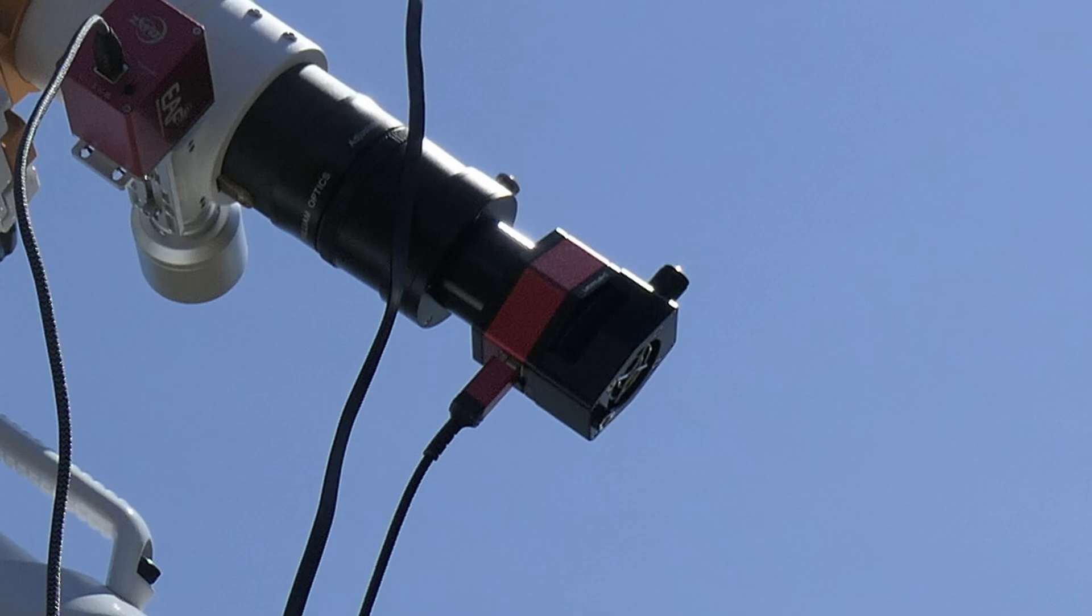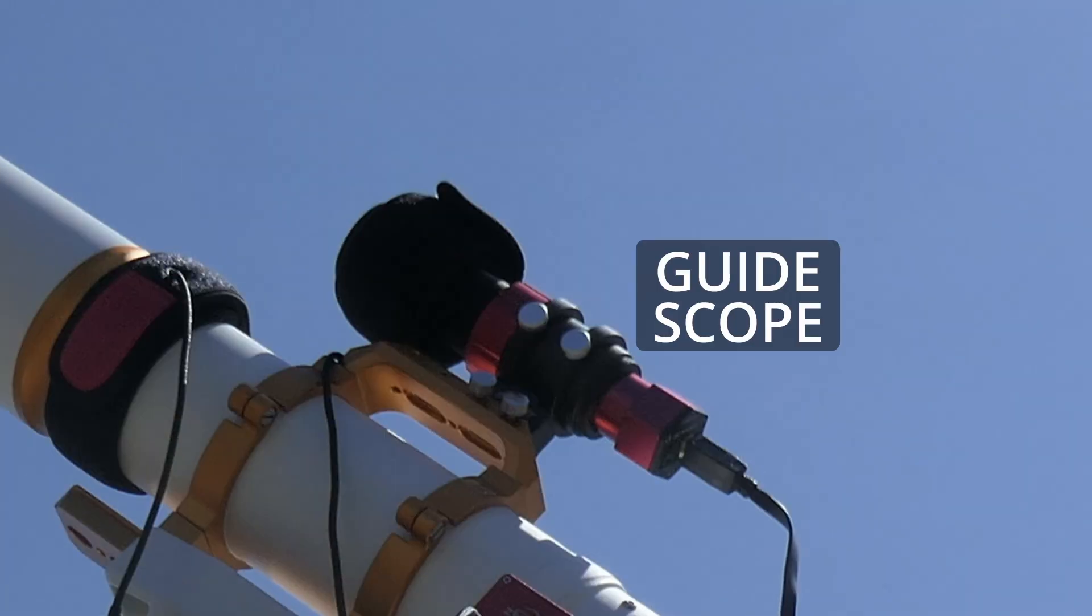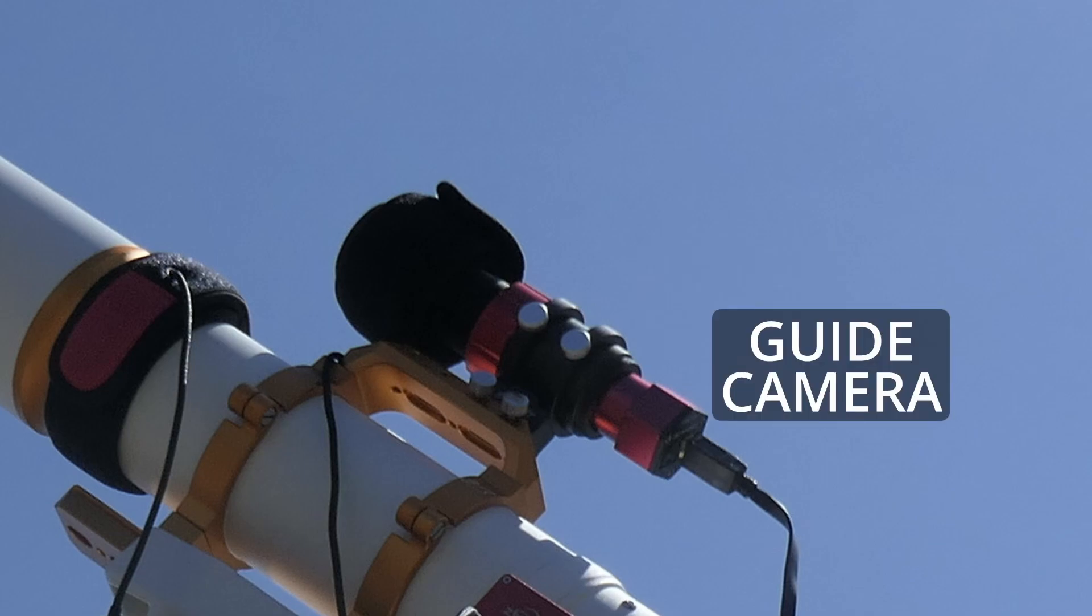In addition to the telescope, we need some way to help the mount find its way as it tracks objects across the sky. Often we use a guide scope, that is a small telescope mounted on top of the larger telescope. The guide scope will have its own camera, often a camera with larger pixels, and usually monochrome as they are better at catching light.